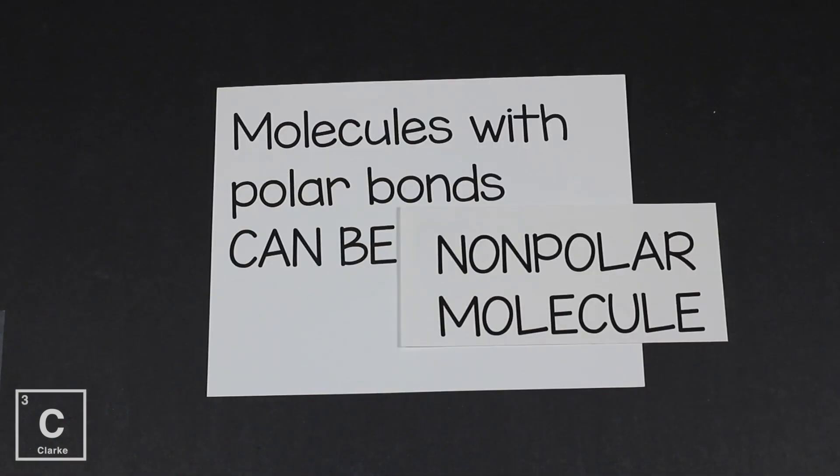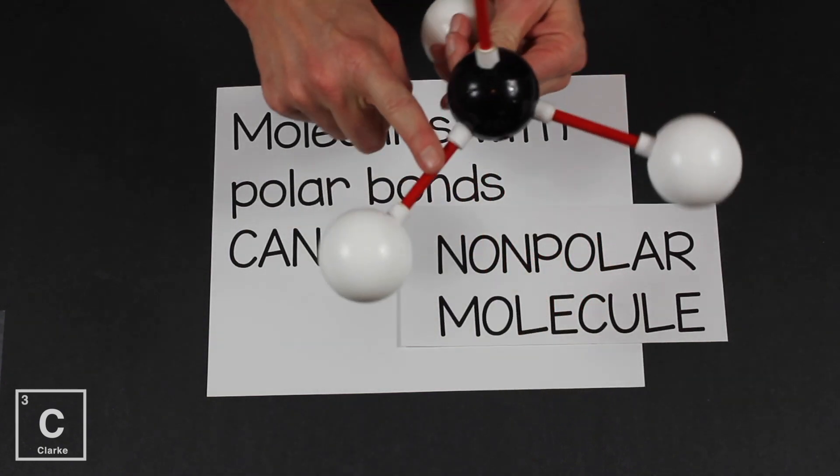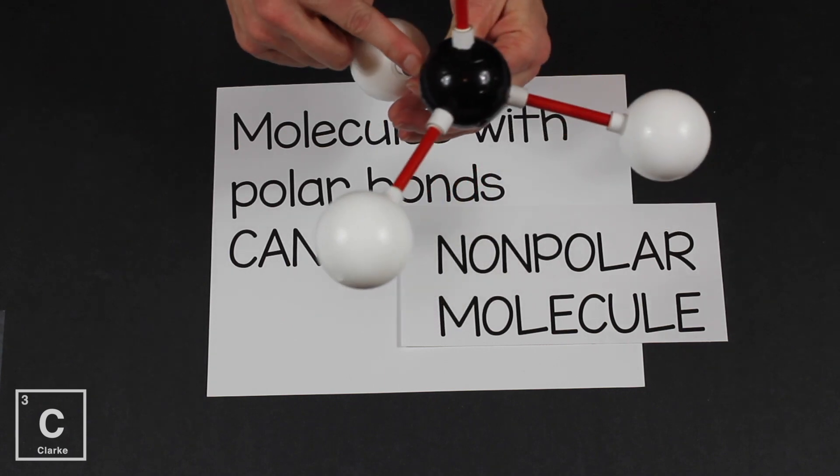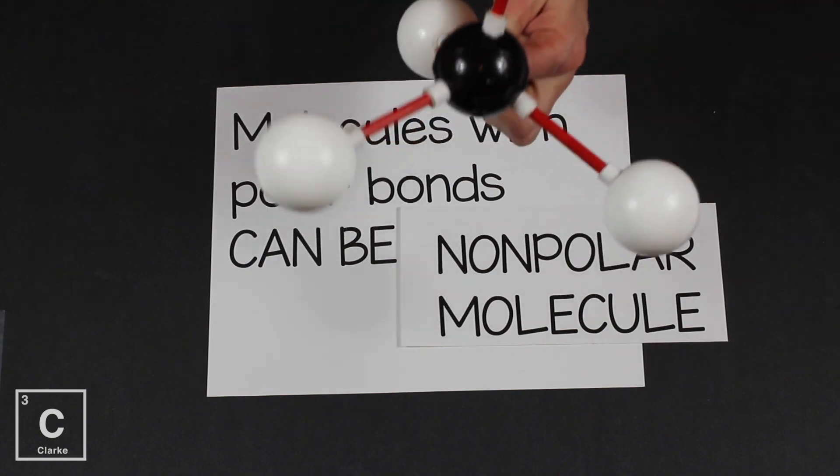So my biggest takeaway is molecules with polar bonds can still be nonpolar. Remember, if it all cancels out because no one wins tug-of-war because we've got equal strength all the way around the central atom, nonpolar. So even if every single bond is polar, this is a polar bond, this is a polar bond, this is a polar bond, all polar, but no one's winning tug-of-war, nonpolar molecule.